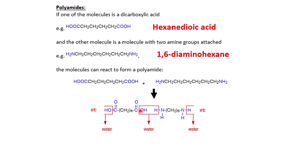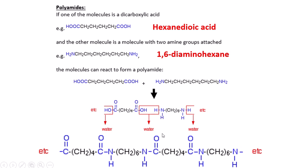Circling those two groups — the OH of the acid and the H of the amine — shows they eliminate water. What forms is a C=O–NH group, which is the amide link. That structure is similar to the peptide bonds linking amino acids in proteins and polypeptides. Because this link repeats along the chain, these polymers are called polyamides.